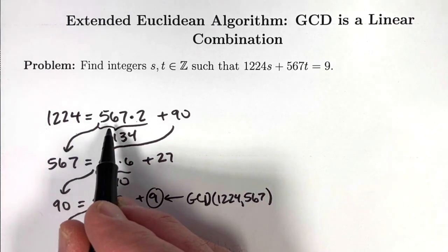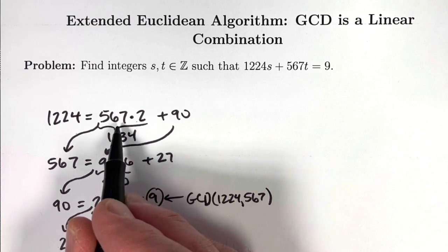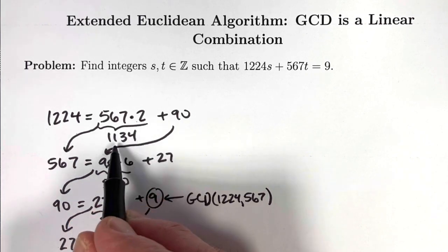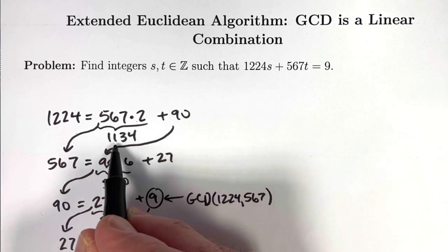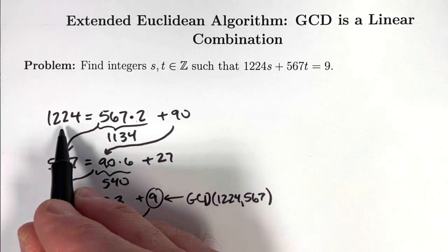We get a quotient of 2. 567 times 2 is 1134, and the remainder is 90. We need to add 90 to 1134 to get 1224.